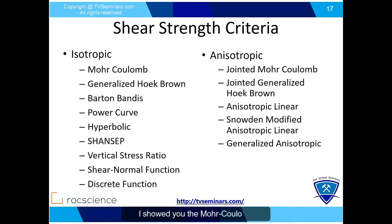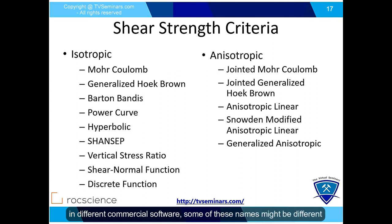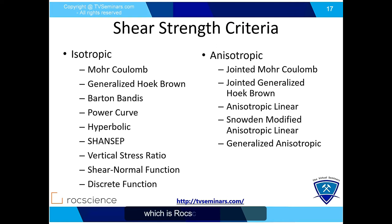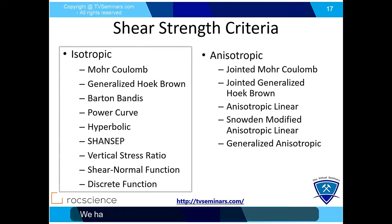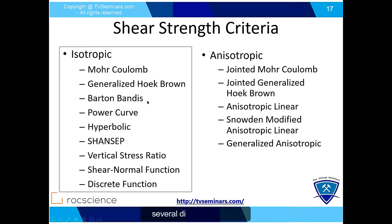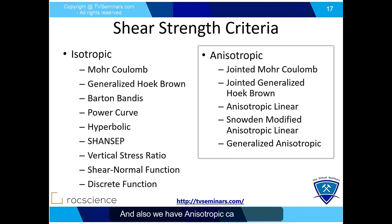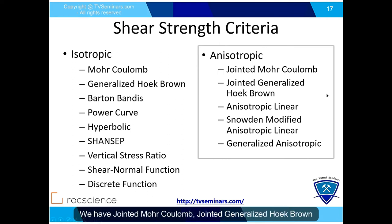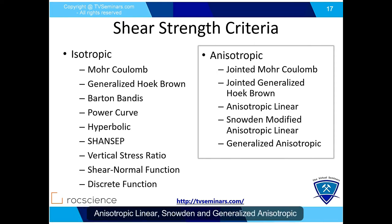In the finite element analysis, we need the original shear strength — that's our failure criteria. In different commercial software some names may differ. In RS2 and RS3, which are RockScience software, we have Mohr-Coulomb, Generalized Hoek-Brown, Barton-Bandis, and several different methods for isotropic cases. We also have anisotropic cases, including Jointed Mohr-Coulomb, Jointed Generalized Hoek-Brown, Anisotropic Linear, Snowden, and Generalized Anisotropic.